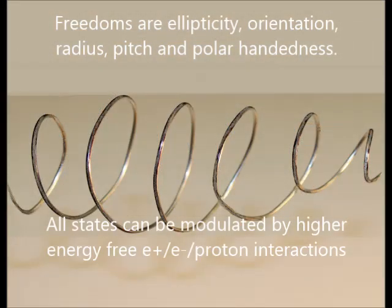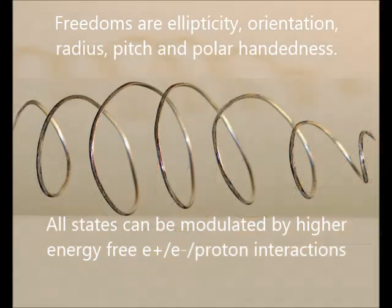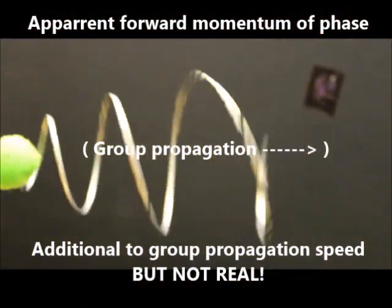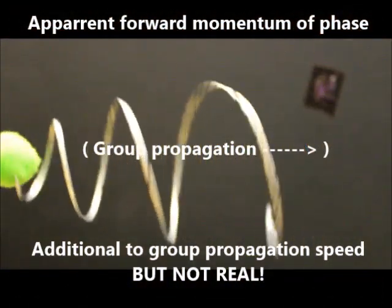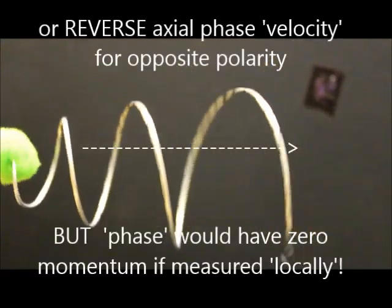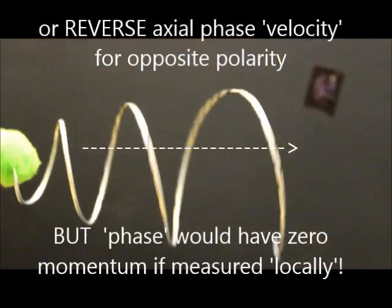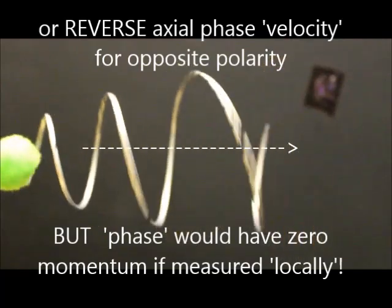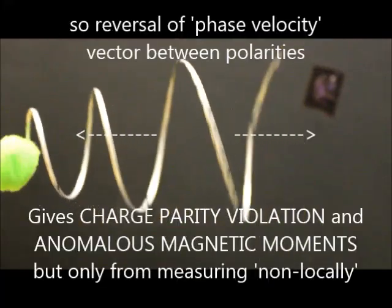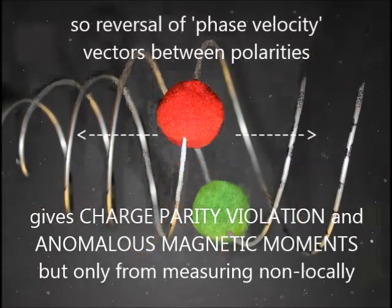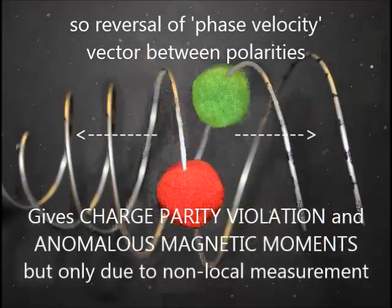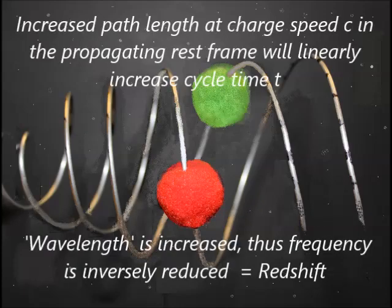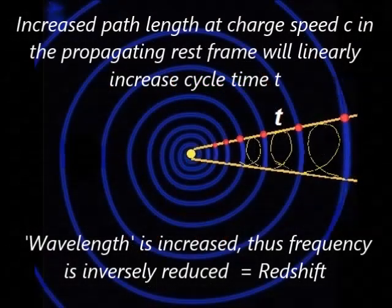Variables are ellipticity, orientation, axis, speed, radius, pitch and polarity. The apparent phase velocity is positive for clockwise orbits or reverse if the orbital direction is reversed. But phase has no velocity or momentum when measured in the local linear rest frame. So reversal of phase velocities between polarities equals the CP and magnetic moment anomalies, but only when measuring non-locally.